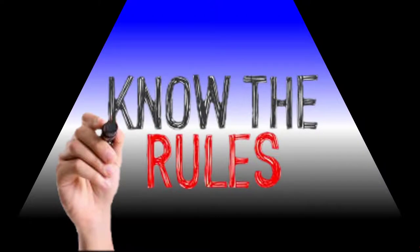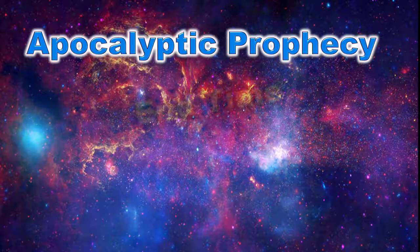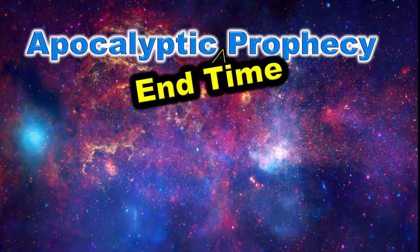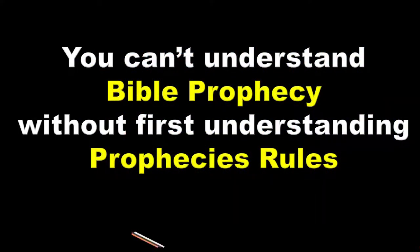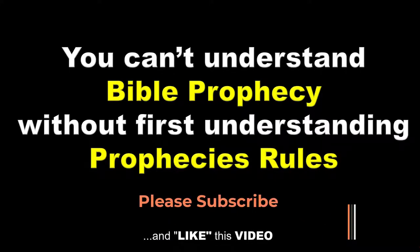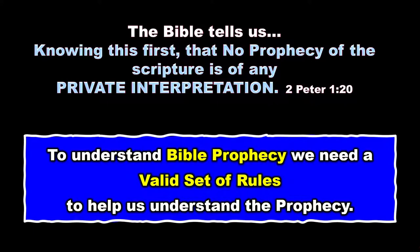The first key is Know the Rules. Apocalyptic prophecy is really what we call end time prophecy. The word apocalyptic is a word describing the end of the world. You can't understand Bible prophecy without first understanding prophecy's rules. And the Bible tells us, knowing this first, that no prophecy of the scripture is of any private interpretation. So to understand Bible prophecy, we need a valid set of rules to help us. Our God is a God of order.